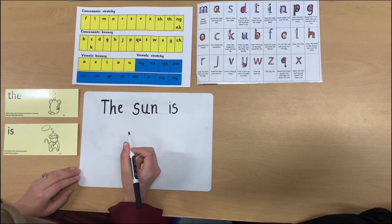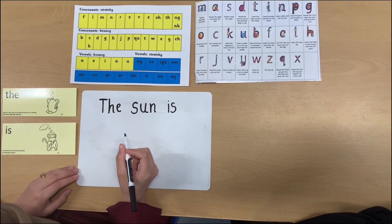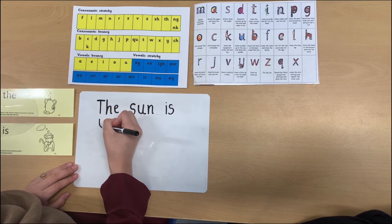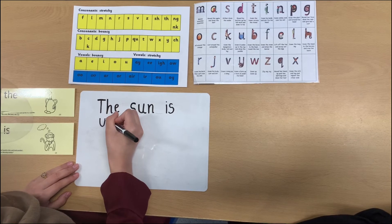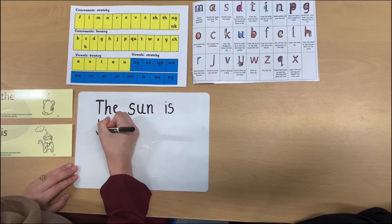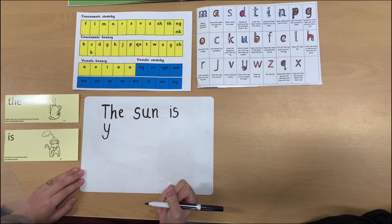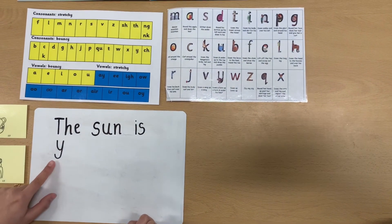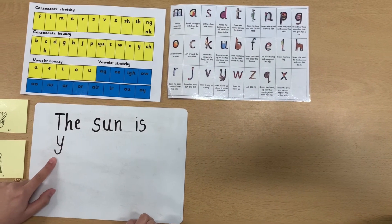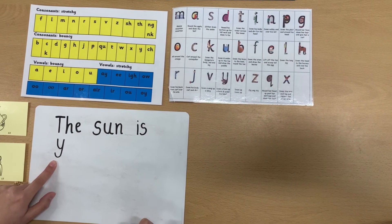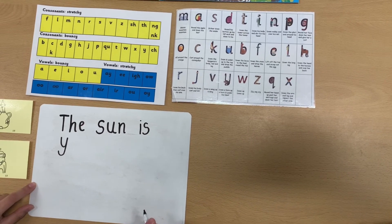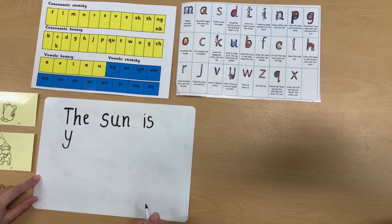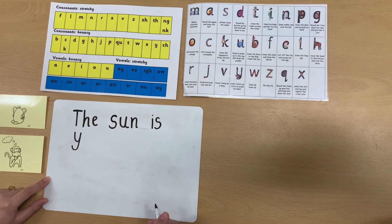I'm going to write yellow. The first sound is y, y, y. So down a horn, up a horn, and under his head. Remember children, that this does not have to be a capital letter because we are still writing one whole sentence. We only write a capital letter at the beginning of a sentence. Okay, the next sound is e. So lift off the top and scoop out the egg.